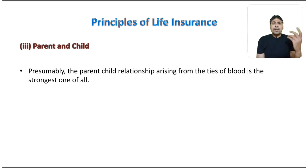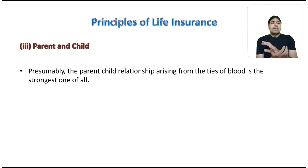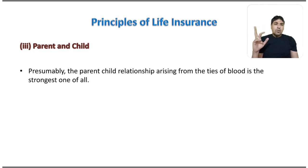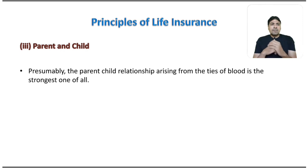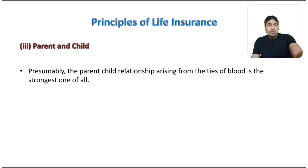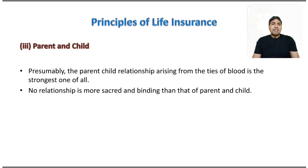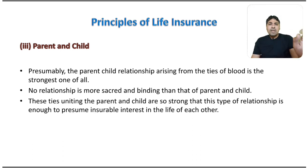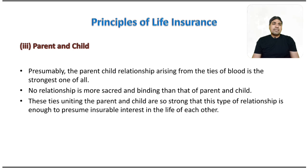The next head under blood relationship is parent and child. The parent-child relationship arising from the ties of blood is the strongest one of all. If parents are dependent on children, then parents have insurable interest in the life of children. If children are dependent on parents, children have insurable interest in the life of parents. No relationship is more sacred and binding than that of a parent and child, and these ties are strong enough to presume insurable interest in each other's life.